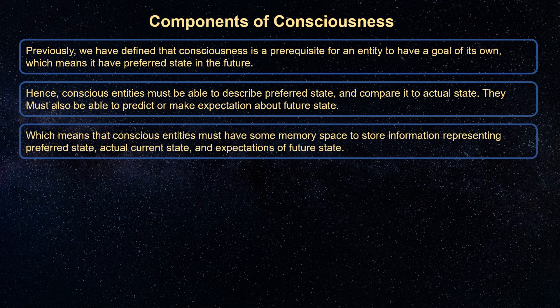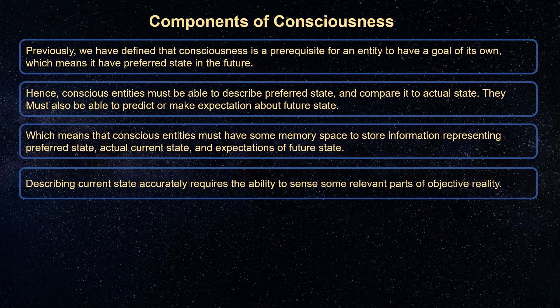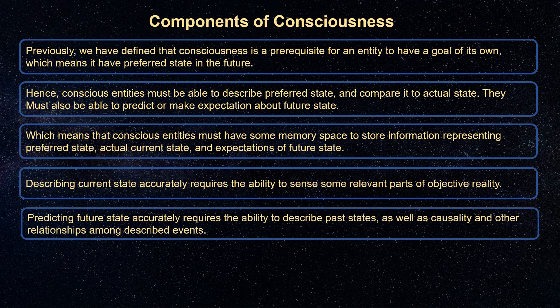This means that conscious entities must have some memory space to store information representing preferred state, actual current state, and expectations of future state. Describing current state accurately requires the ability to sense some relevant parts of objective reality. Describing future state accurately requires the ability to describe past states, as well as causality and other relationships among described events.